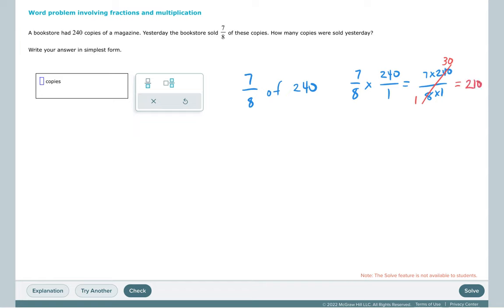If we do it just by thinking about what is one-eighth of 240, one-eighth of 240 is 30. And then we want seven-eighths, so we need to multiply this by seven. And we still get 210. And these were the copies that were sold yesterday.